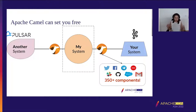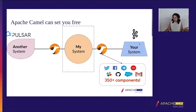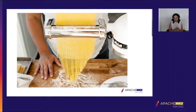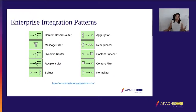It has a huge library of components that can go from connecting with very legacy systems to modern cloud services in Google Cloud, AWS, or WhatsApp. You can connect to cool stuff like Kafka or Pulsar. You can build chatbots and use a very large component set. And having those components is not enough, because when we integrate systems, we tend to want many operations — and those operations are already described in what we call enterprise integration patterns.